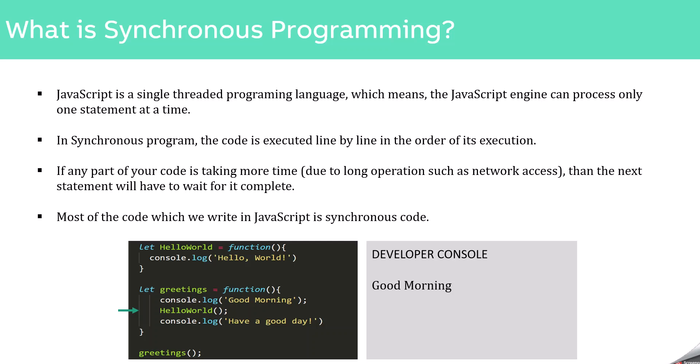Then we move to the next statement, where we are calling the Hello World function. So again, execution control will move to the definition of the Hello World function. Inside this function, we have a single console.log statement, which will log 'Hello World' in the developer console. Then this function returns, so we are back to the Greetings function from where we called Hello World. Once the execution of Hello World is complete, we move to the next statement, and this console.log statement will log its message in the developer console. Then the Greetings function returns.